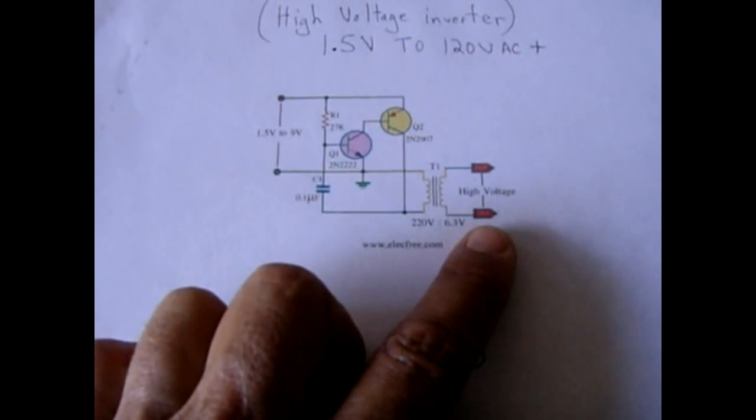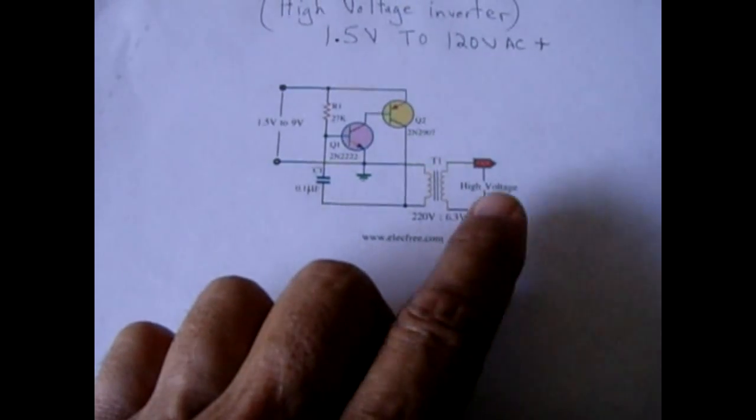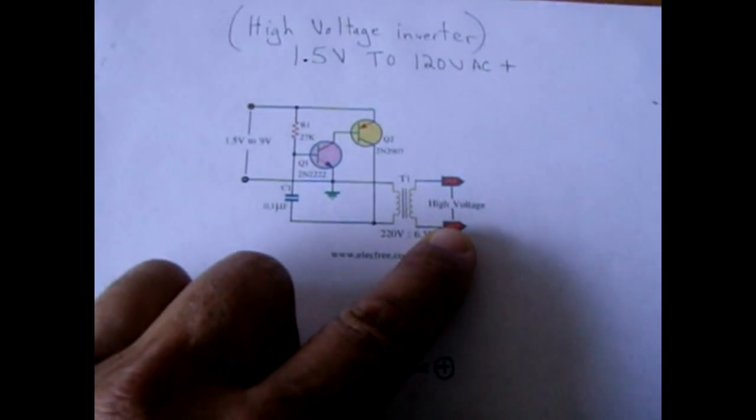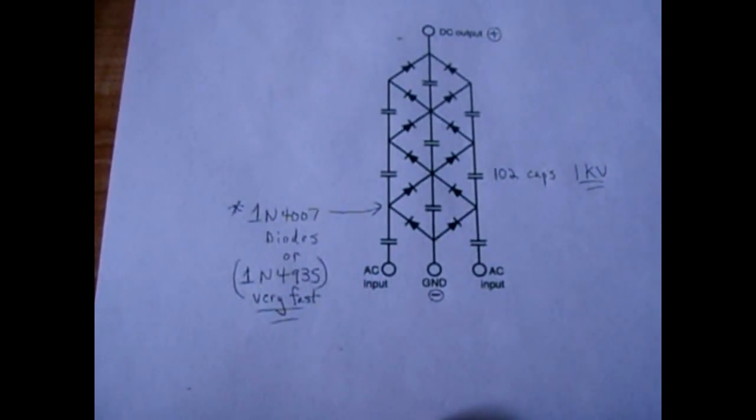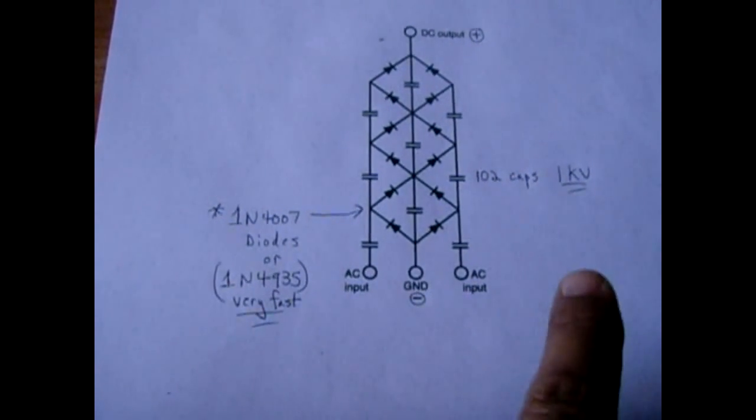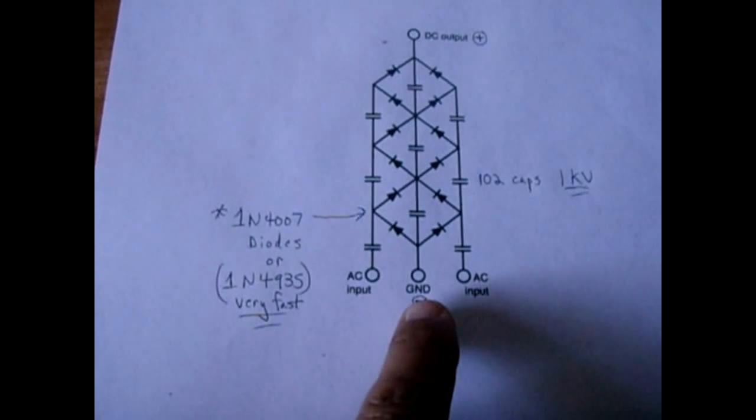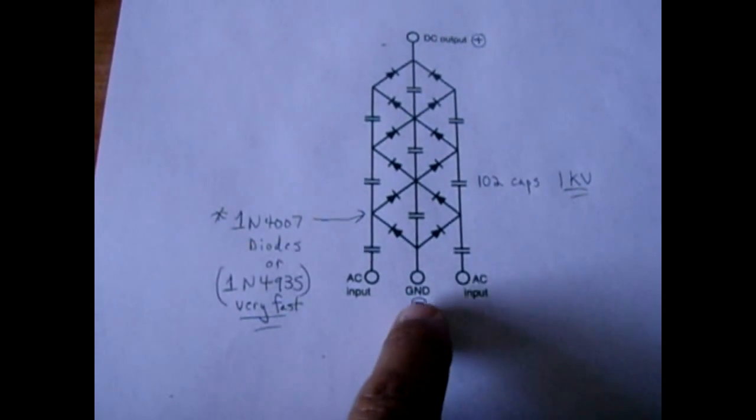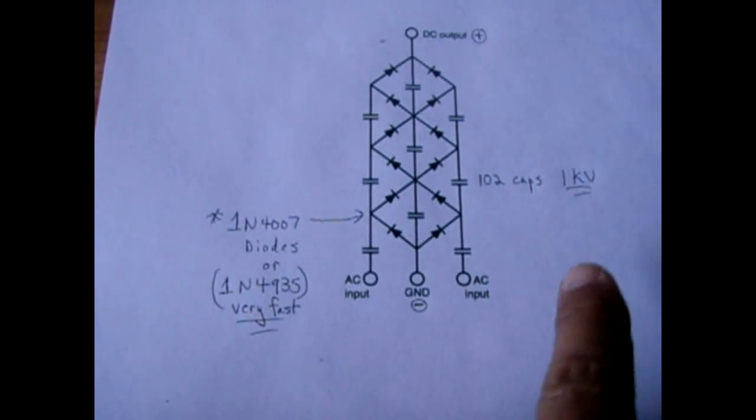Once you got it where you like it, if you're not happy with a 150 to 200 volt output, you would take this output and feed it into this circuit below which is a voltage multiplier circuit. You would take your high voltage output from the other circuit, tie it into there and there, and then you would have a negative, you'd have a DC output. This would be the negative and up top would be the positive.